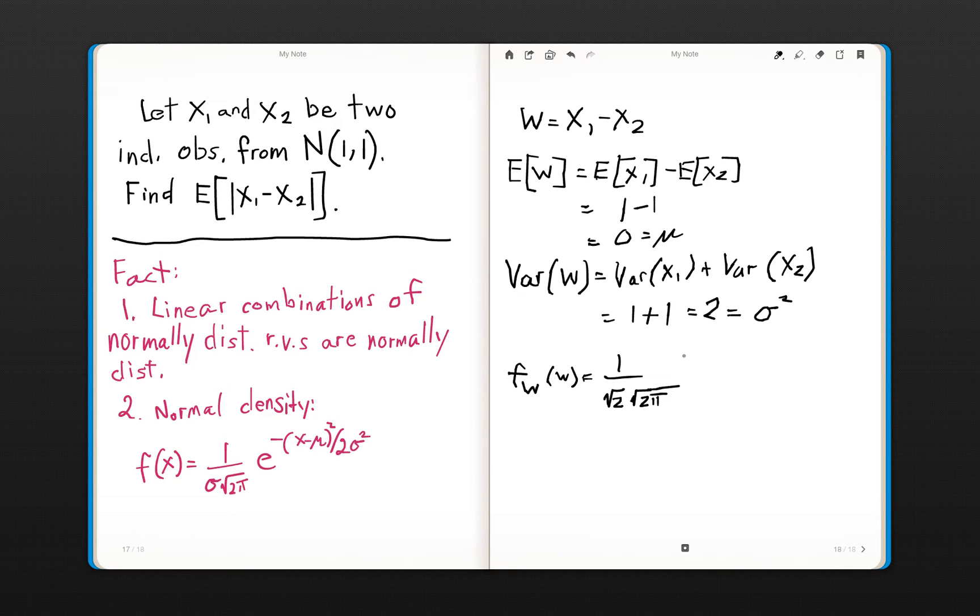And then times e to the negative W minus 0 quantity squared divided by 2 times sigma squared. So this is just equal to 4, 2 times 2. So that's the density of W.